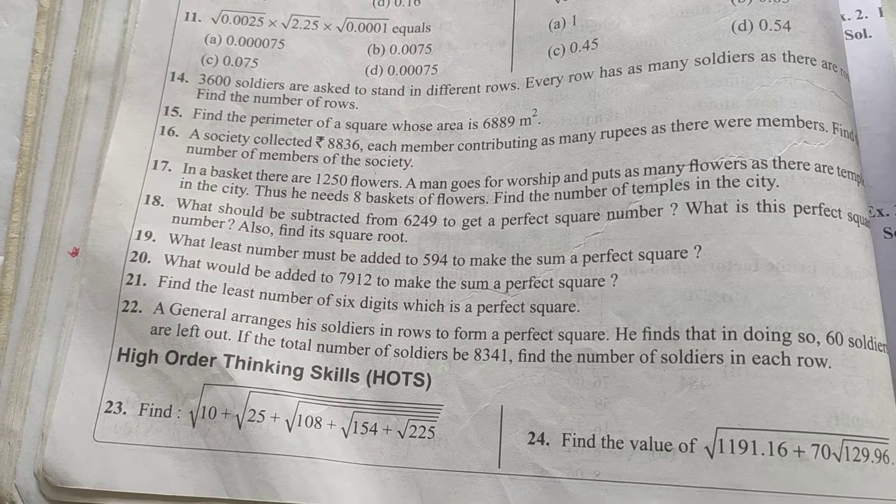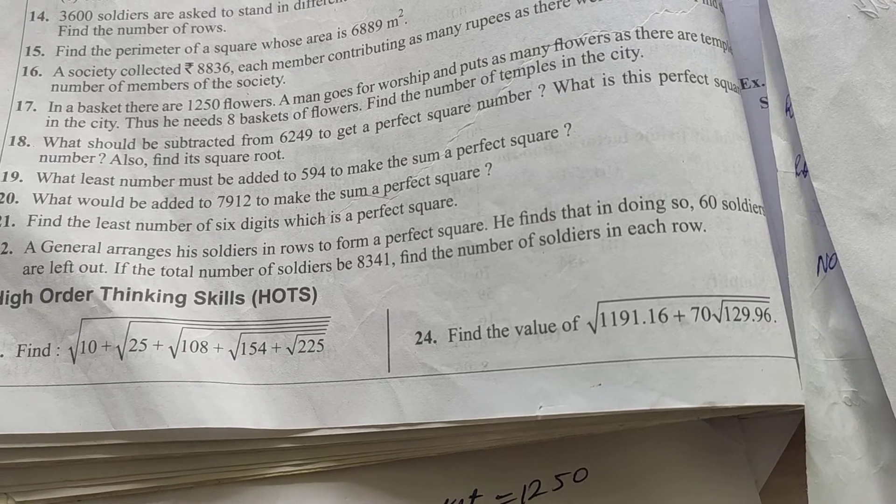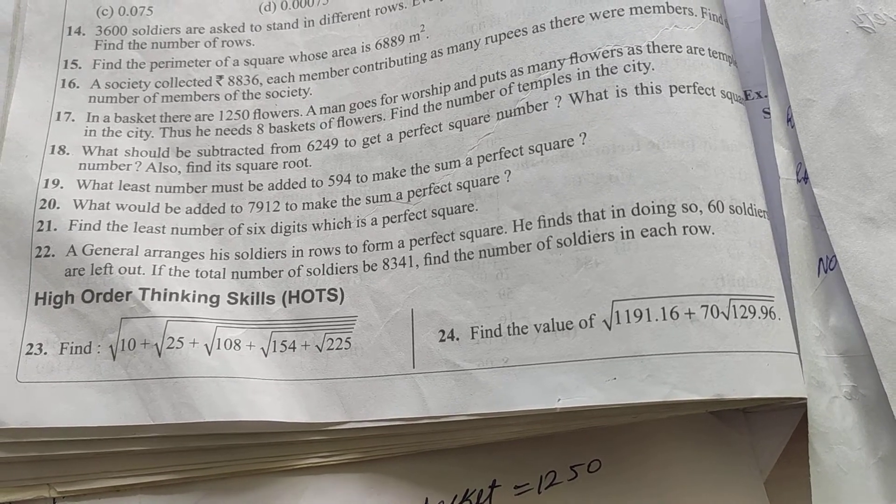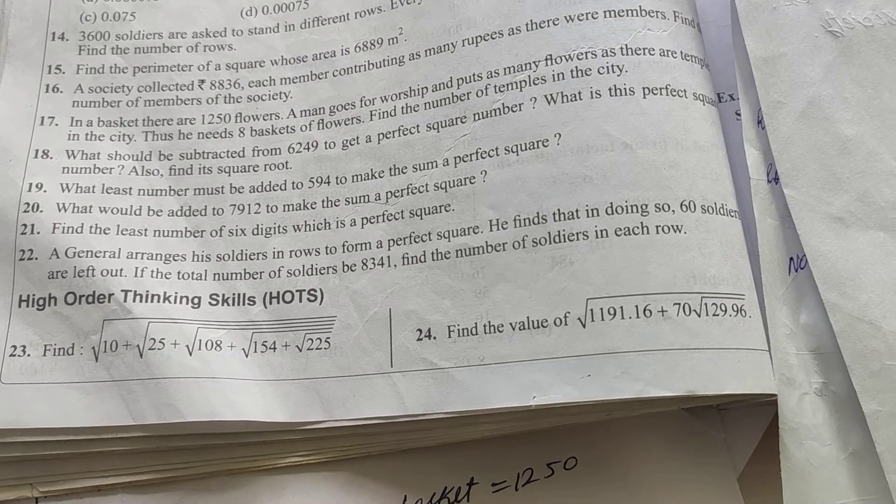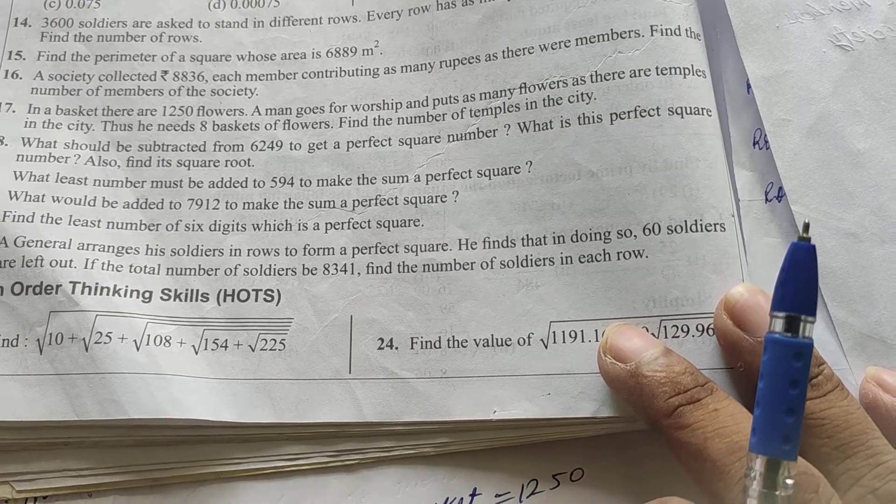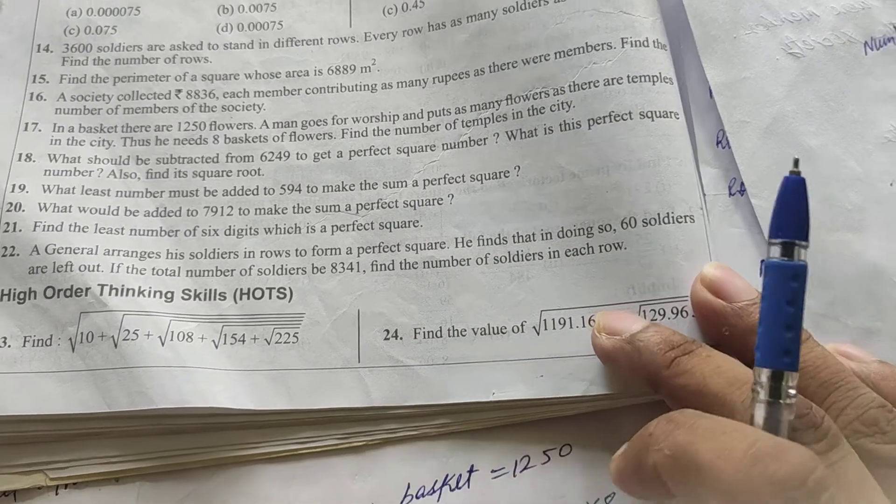Let us solve question number 17. Question number 17 says that in a basket there are 1250 flowers. A man goes for worship and puts as many flowers as there are temples in the city. Thus he needs 8 buckets of flowers. Find the number of temples in the city.